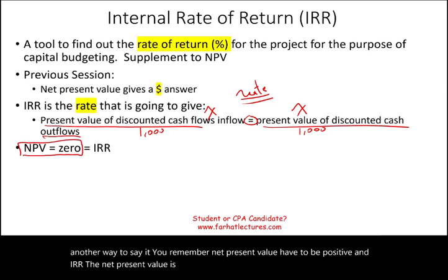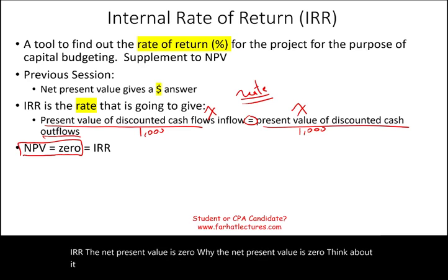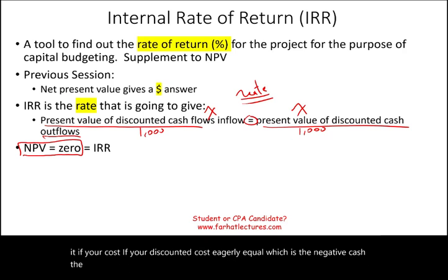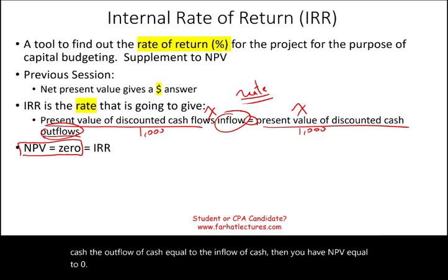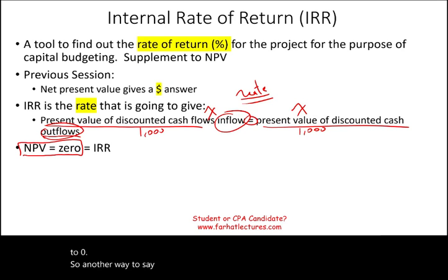Why is net present value zero? Think about it. If your discounted cost — the outflow of cash — equals the inflow of cash, then you have NPV equal to zero. So another way to say what IRR is: IRR is when NPV equals zero.